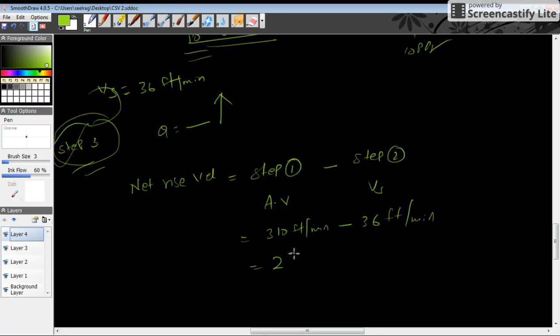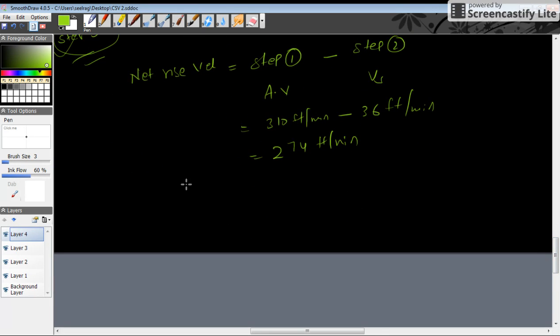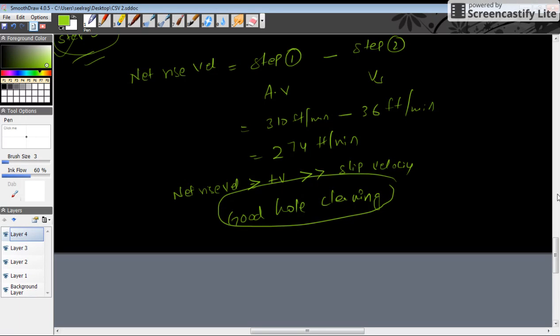So here we can observe that net rise velocity is positive and is way greater than the slip velocity. This indicates good hole cleaning. And from the question, yes, the flow rate from the mud pump which is Q equals 300 gallons per minute is sufficient for this open hole to get the cuttings back to the surface.